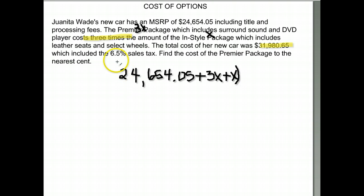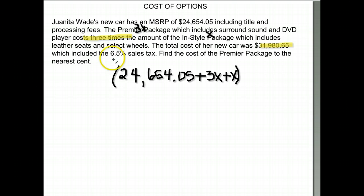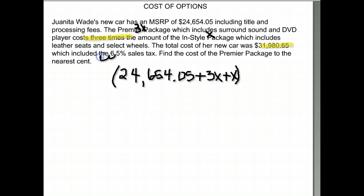We also have to pay tax on the total, which is six point five percent. Rather than finding the tax separately, I'm going to use the method where you multiply by one number to get the cost and the tax together — you move the decimal two places to the left.